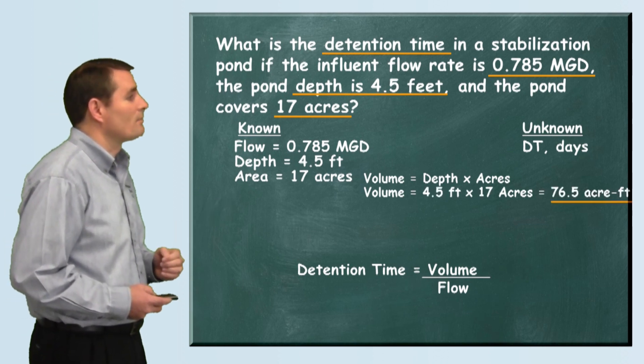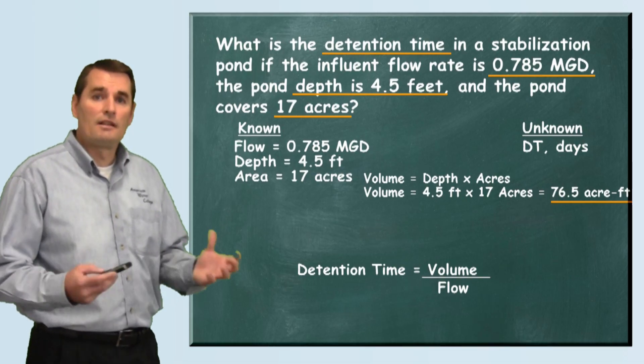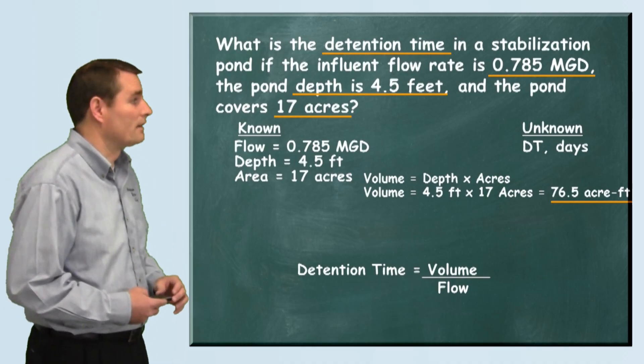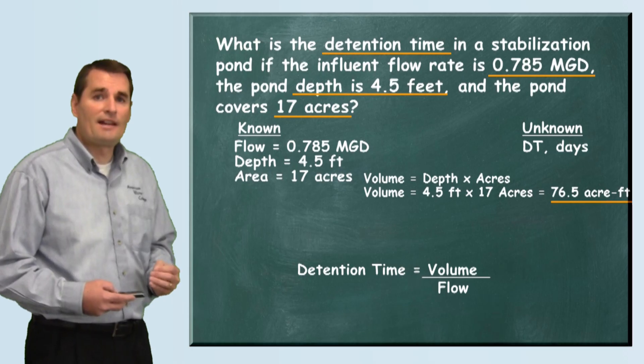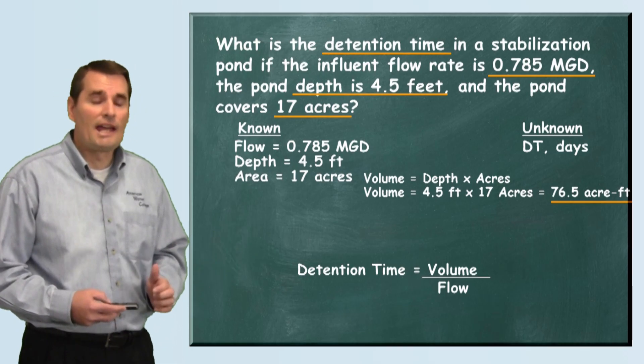When we plug these numbers in we find that we have 76.5 acre-feet of volume in this pond. So the 4.5 foot depth times the 17 acres gives us that 76.5 acre-feet.